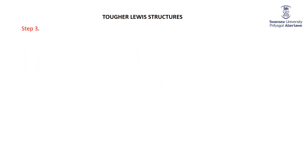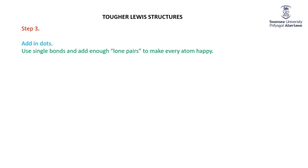Step three: we've got our connectivity — let's add in the dots. We use single bonds and add enough lone pairs so that every atom is happy. Throughout all this, we're just drawing dots and lines; there is no physical significance to any of those things until we finish and then we say these dots and lines represent electrons. But right now we're just drawing pictures.